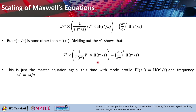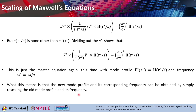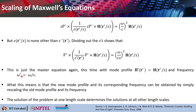Dividing throughout by s, we find that s enters into the omega term. We can rewrite the equation in normal form by considering H'(r') = H(r'/s) as a new mode profile and omega' = omega/s as the new frequency. This means the new mode profile and its corresponding frequency can be obtained by simply scaling the old mode profile and its frequency. The solution of the problem at one length scale determines the solution at all other length scales.